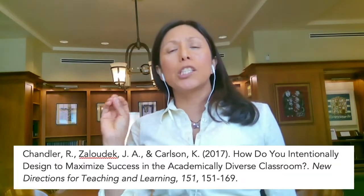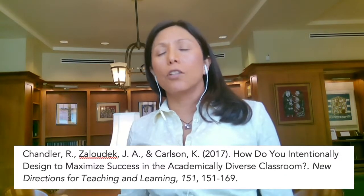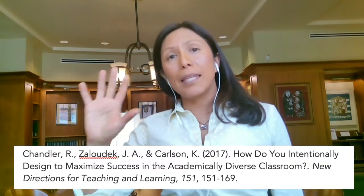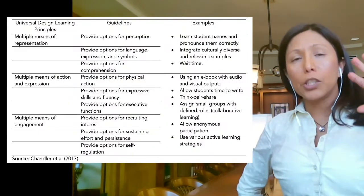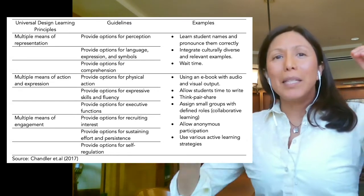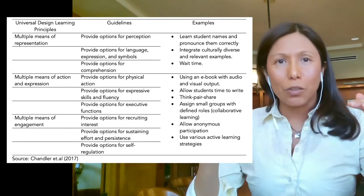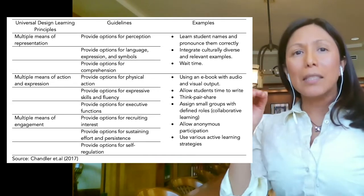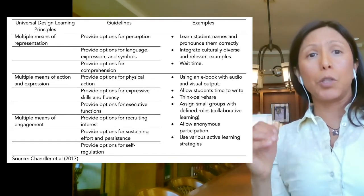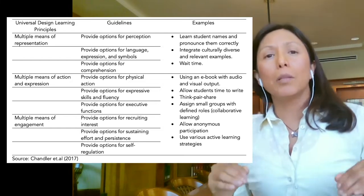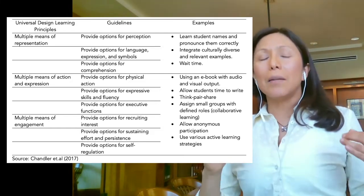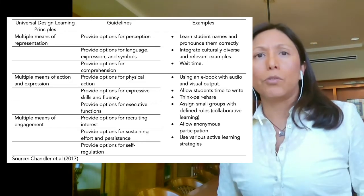Chandler, Zaludek, and Carlson developed this table where they explain the principles of universal design learning. There are three of those: multiple means of representation, multiple means of action and expression, and multiple means of engagement.